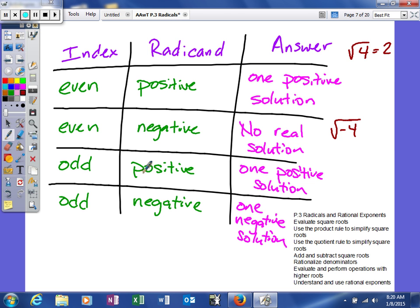However, we could have an odd index and a positive radicand, such as this, the cube root of 8. The cube root of 8. Your index basically means, you know, when you're taking the root of something, you're looking for what can you multiply by itself, the number of times represented by your index, to get your radicand. So in other words, what can I multiply by itself three times to give us 8? And that answer is 2. So as you can see, you get one positive solution. 2 times 2 is 4 times 2 is 8.